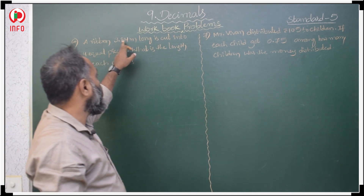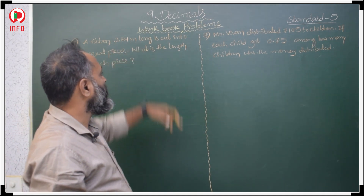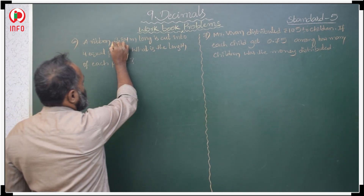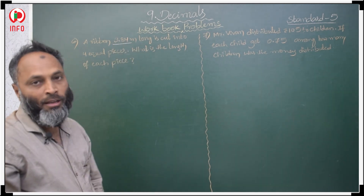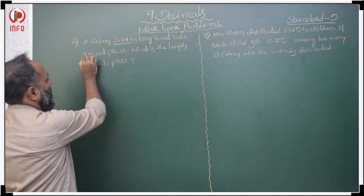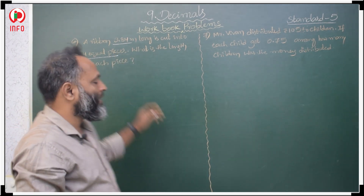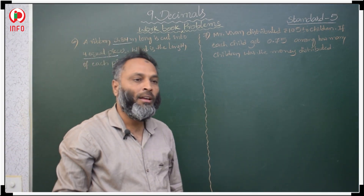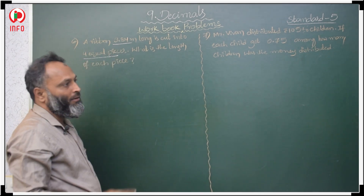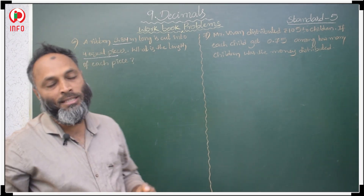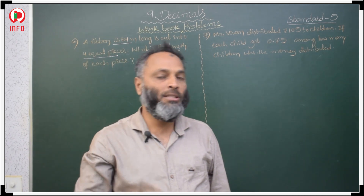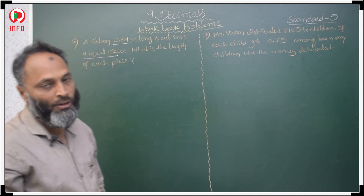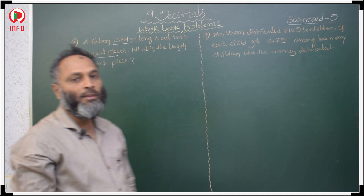The sixth problem: a ribbon 3.84 meters long is cut into 4 equal pieces. The total length of the ribbon is 3.84 meters, cut into 4 equal pieces. He is asking what is the length of each piece. Since 4 pieces' total length is given and we need one piece, we should divide. The total length divided by 4 will give each piece's length.